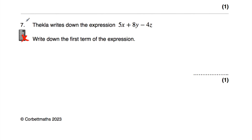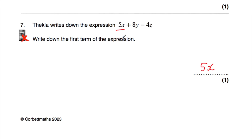Question number 7: Tecler writes down the expression 5x plus 8y subtract 4z, and we've been asked to write down the first term of the expression. The first term would be 5x. The middle term would be 8y, and the last term would be minus 4z. But we were asked to write down the first term, so the answer is 5x.